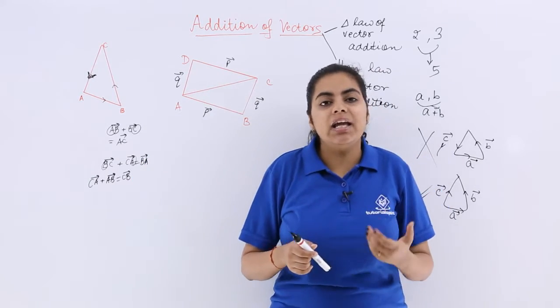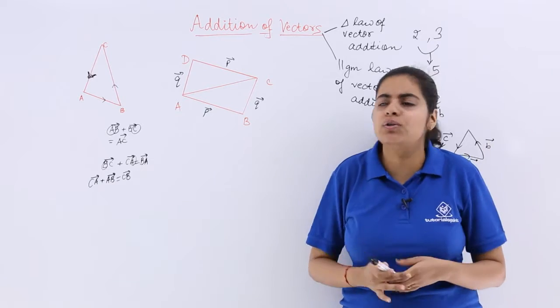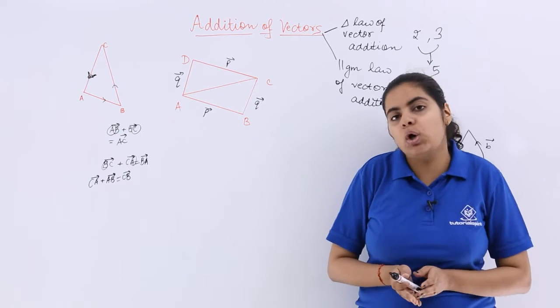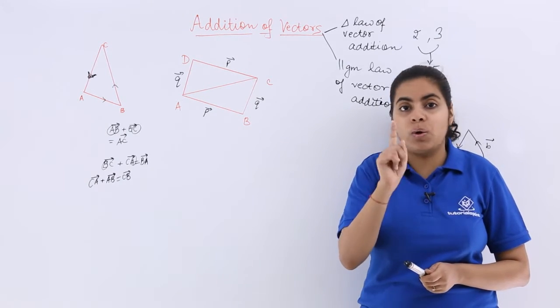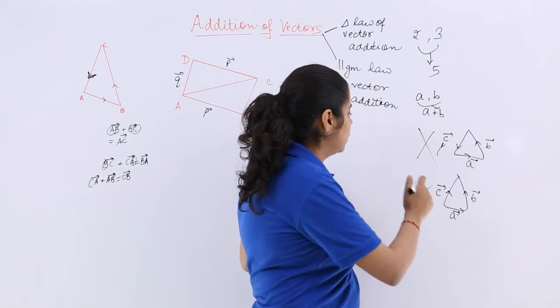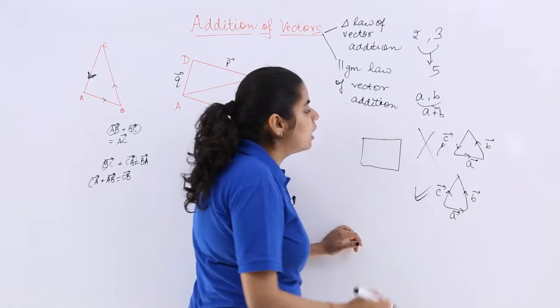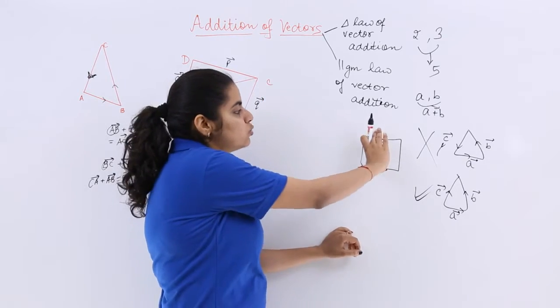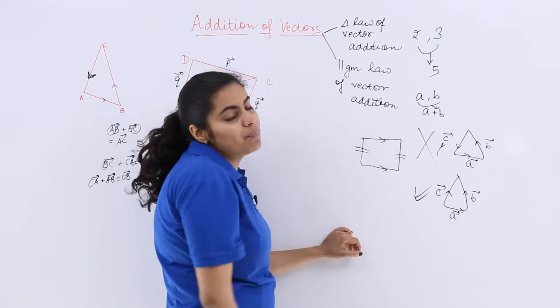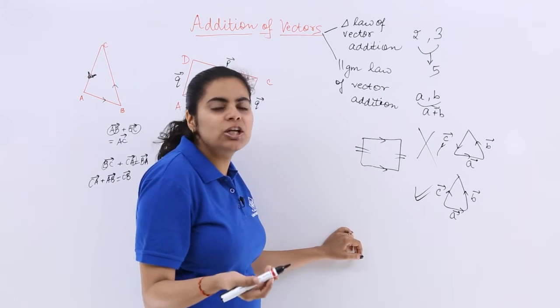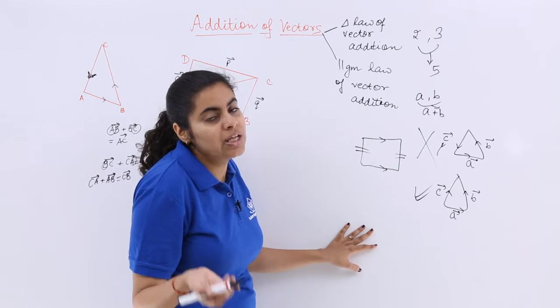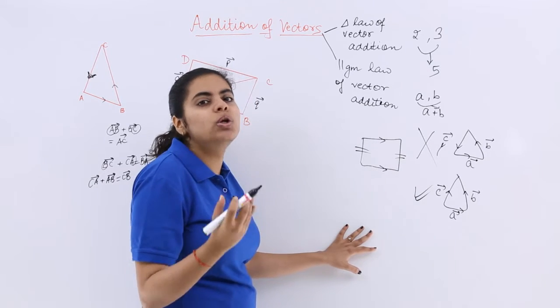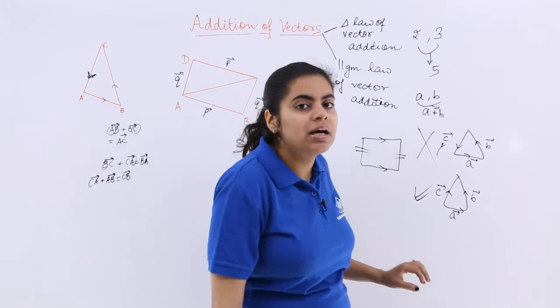The second law is specifically known as the parallelogram law of vector addition. That means if you have to compute the addition of vectors and you do not want to use triangle law, you can use the parallelogram law also. In parallelogram law, that depends upon whether you know what is a parallelogram or not. A parallelogram is nothing but a quadrilateral having pairs of parallel sides. These two are parallel to each other, and this and this is parallel to each other. So all your rectangles, squares, these are also a type of parallelogram only. Opposite sides must be parallel to each other, and there is a property that opposite sides are equal also.